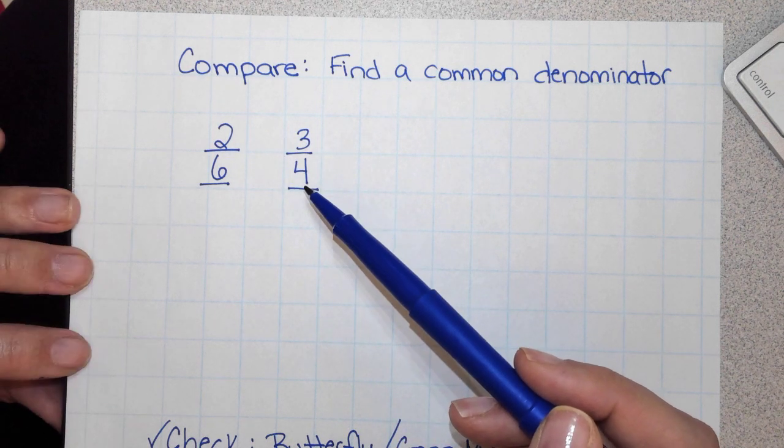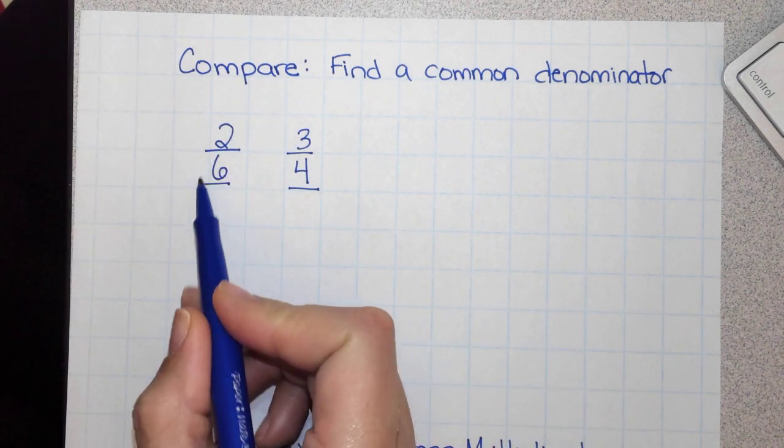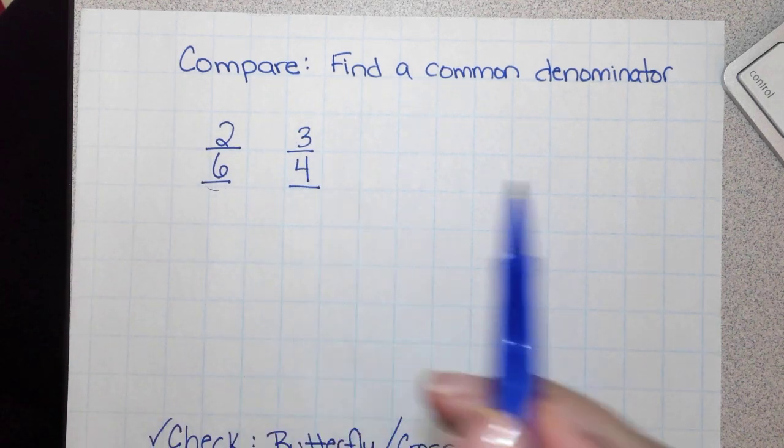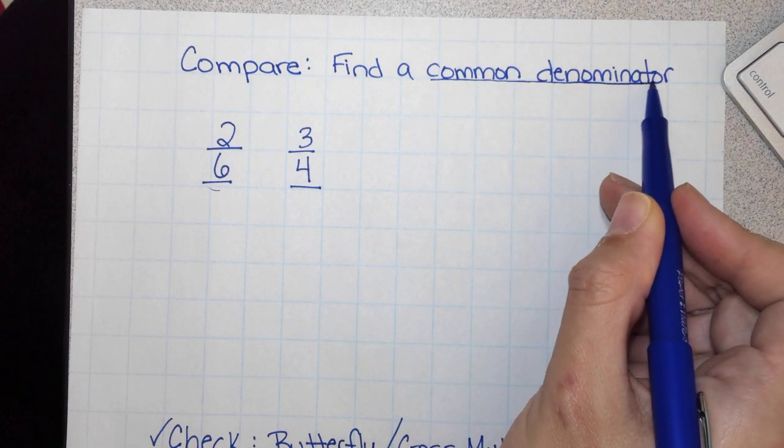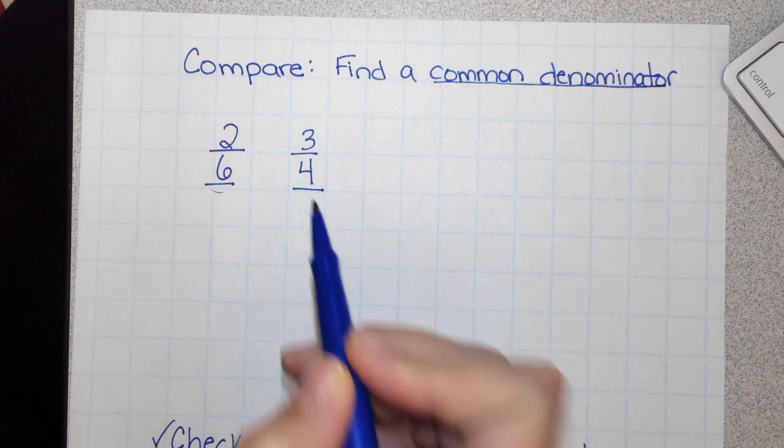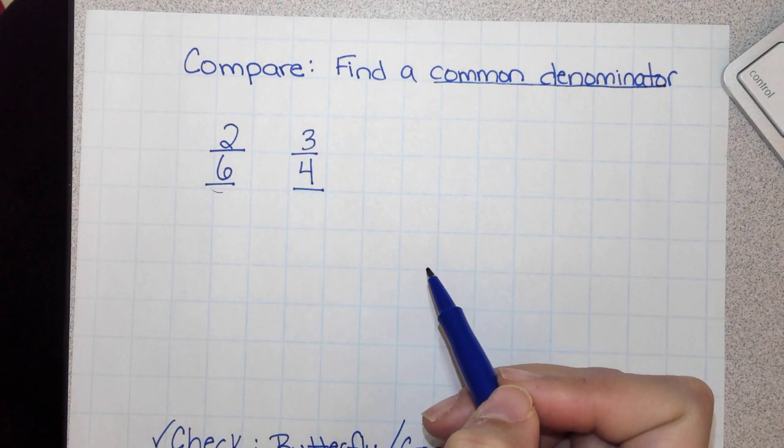To start, I need to look at my denominators. So I have the denominator 6 and 4. To find a common denominator, I need to think which multiple of 6 and 4 do they have in common.